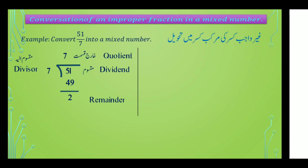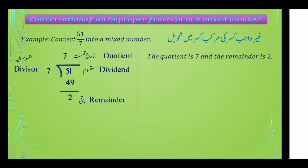اس طرح سے division method complete ہوتی ہے — اوپر 7 خارجی قسمت یعنی quotient ہے، اور جو 2 باقی بچا وہ remainder ہے۔ یہ بہت important چیزیں ہیں — divisor، quotient، dividend اور remainder یاد رکھنا ہے۔ The quotient is 7 and the remainder is 2۔